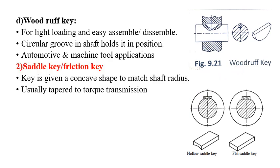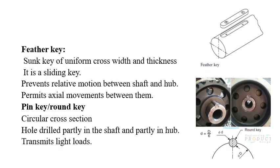In the saddle key and friction keys, the key is given a concave shape to match the shaft radius. Only the key has a curvature which matches the curvature of the shaft, and you don't have any key seat in the shaft in this case. Usually it is tapered at the top. Next is the feather key, which is a sunk key of uniform cross section.